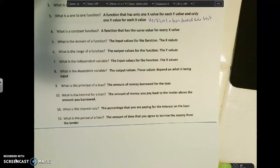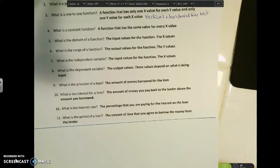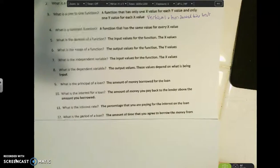The period of the loan is the amount of time that you agree to borrow the money from the lender. So if it's a five-year loan, you'll agree to pay the loan back in 60 months. Or if it's a four-year loan, you'll agree to pay the loan back in 48 months. So the period of the loan is how long you agree with the lender at the beginning to have the loan for.